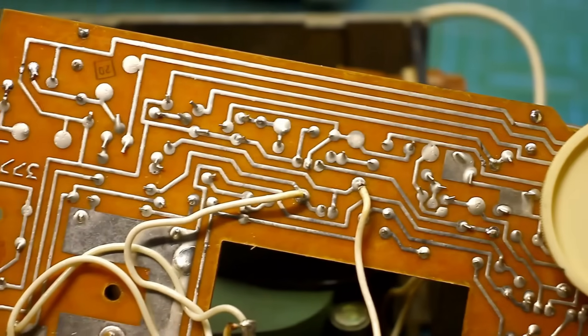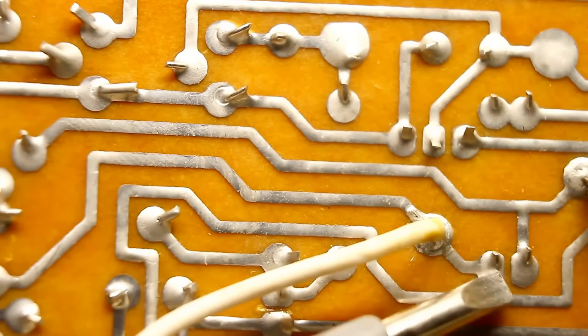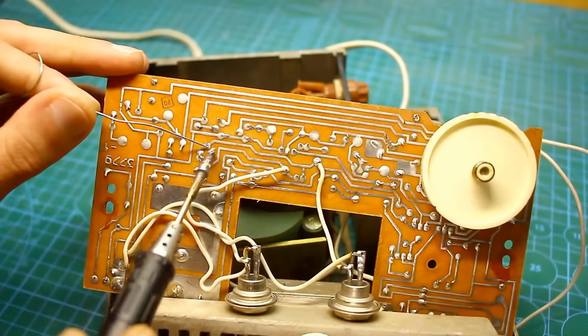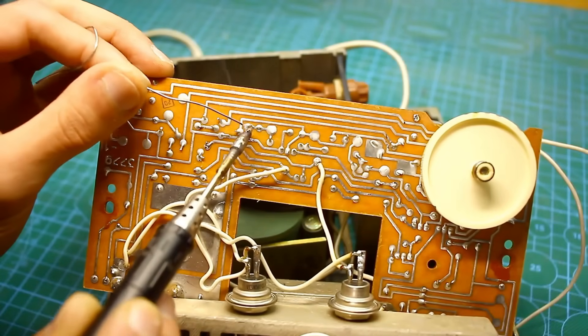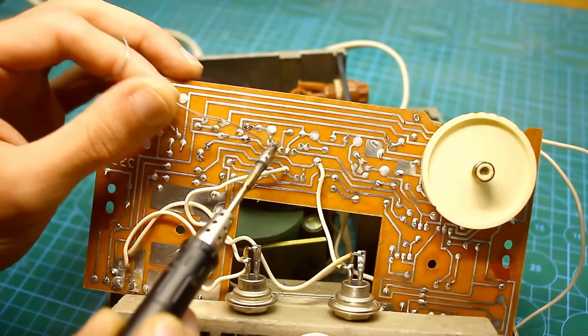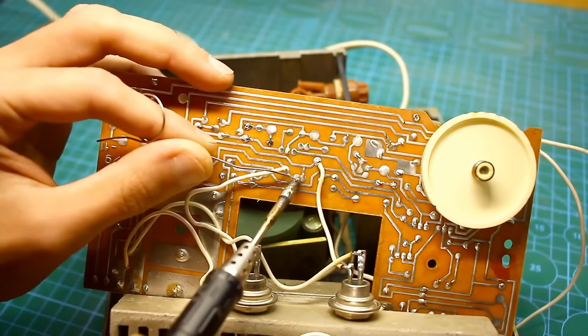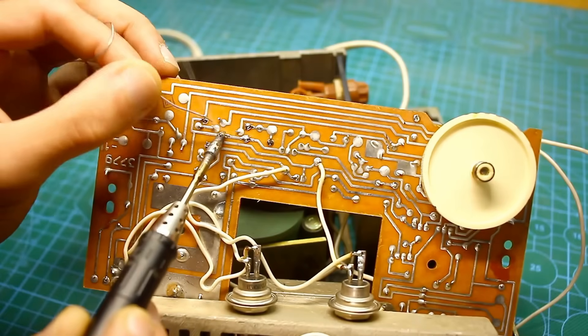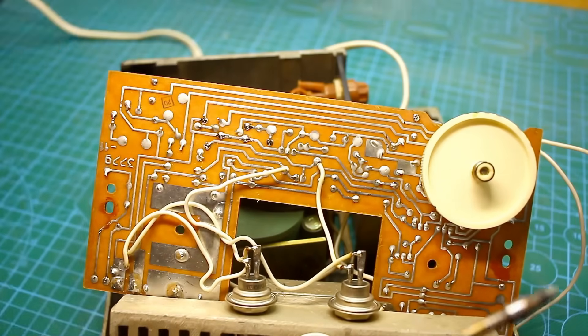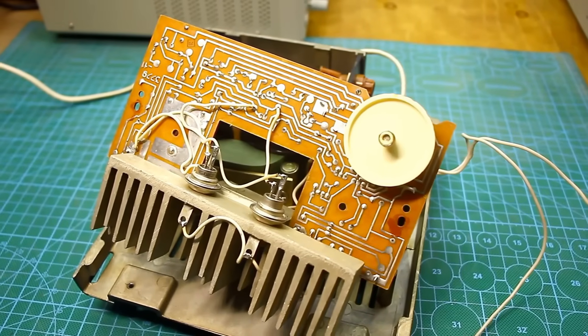Next, you need to carefully inspect the board. It's quite old and you can notice something like ring cracks. I didn't notice any breaks here, but I soldered the suspicious areas additionally. Next, we clean everything and proceed to testing.